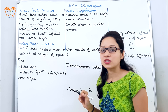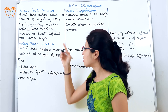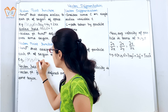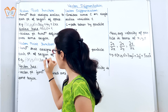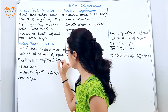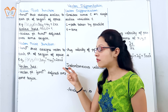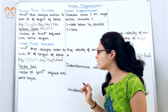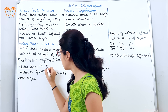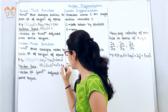Moving on to vector point function — it is a function that assigns a vector to each point of a region of space. We will consider the previous example: F(x, y, z) = 3xy î + 4y ĵ + 2xz k̂. Here î, ĵ, and k̂ are unit vectors on the coordinate axes x, y, z respectively. Considering the same values x = y = z = 1, the answer will be 3î + 4ĵ + 2k̂.